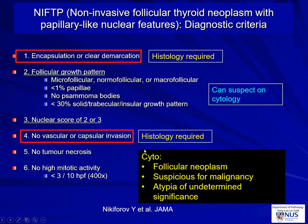To reiterate, on cytology, this is the terminology from the Bethesda system. Most of the time, NIFTPs will fall into three categories: follicular neoplasm, suspicious for malignancy, or atypia of undetermined significance.